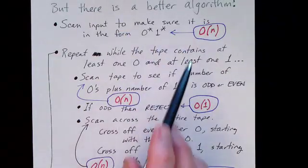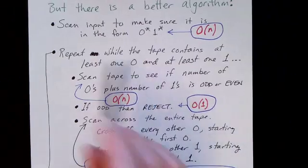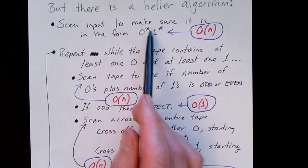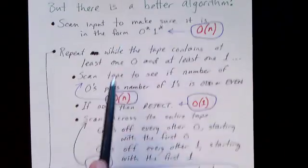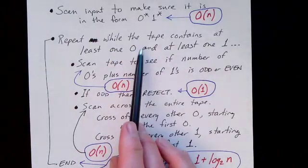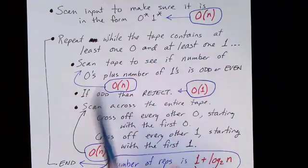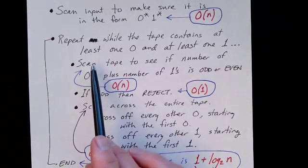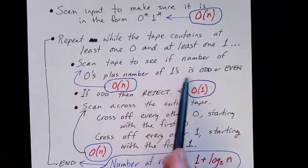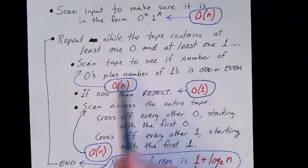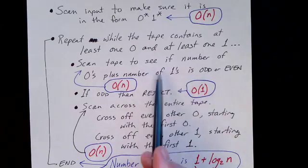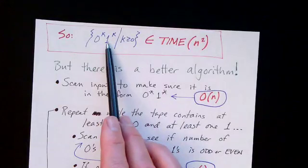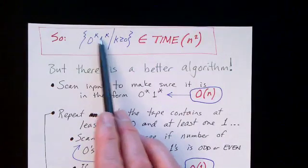We'll talk about the algorithm first, then come back and look at the runtime information. The first thing we do is scan the input to make sure it is in the form of zeros followed by ones, with nothing out of order. Then we have a repeat loop: while the tape contains at least one zero and at least one one, the body of the loop is different from the previous algorithm. We scan the tape to see if the total number of zeros plus ones is odd or even. If this string is a member of this language, it should have length N equal to 2k — in other words, the length should be even.